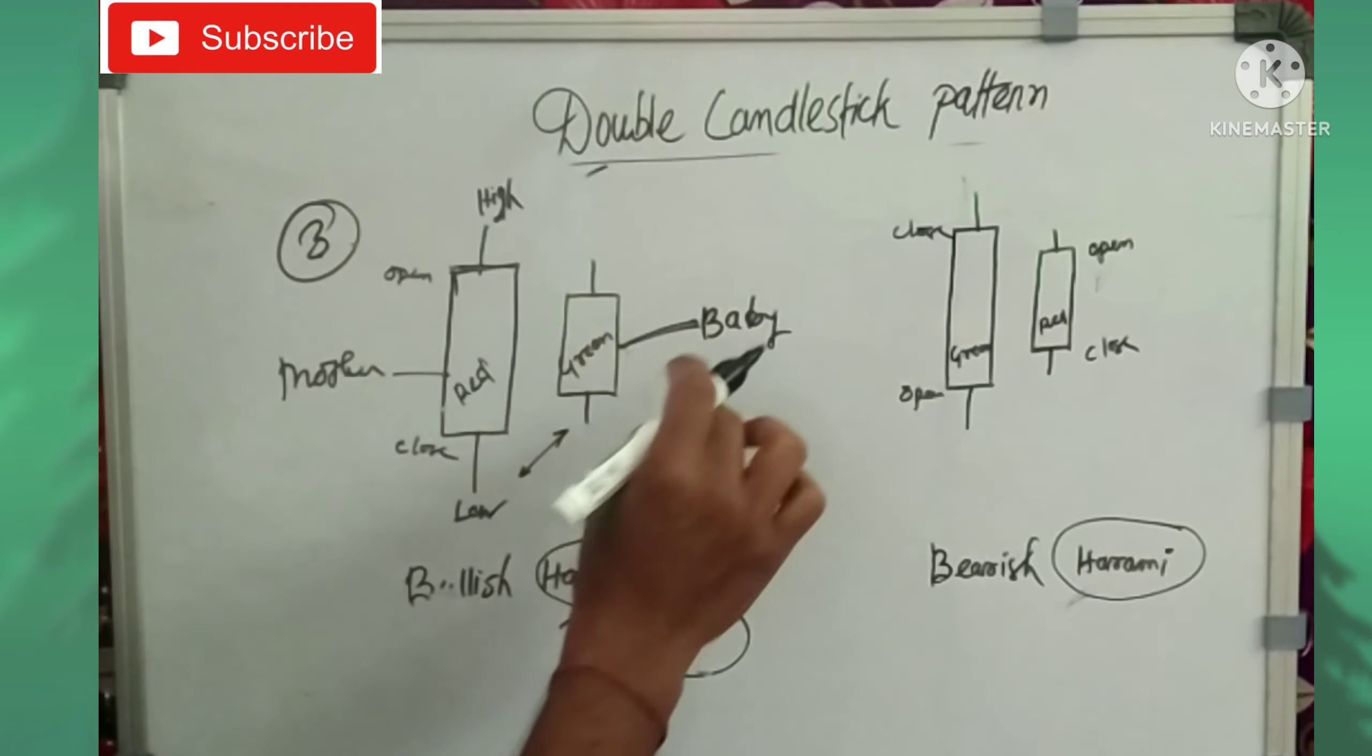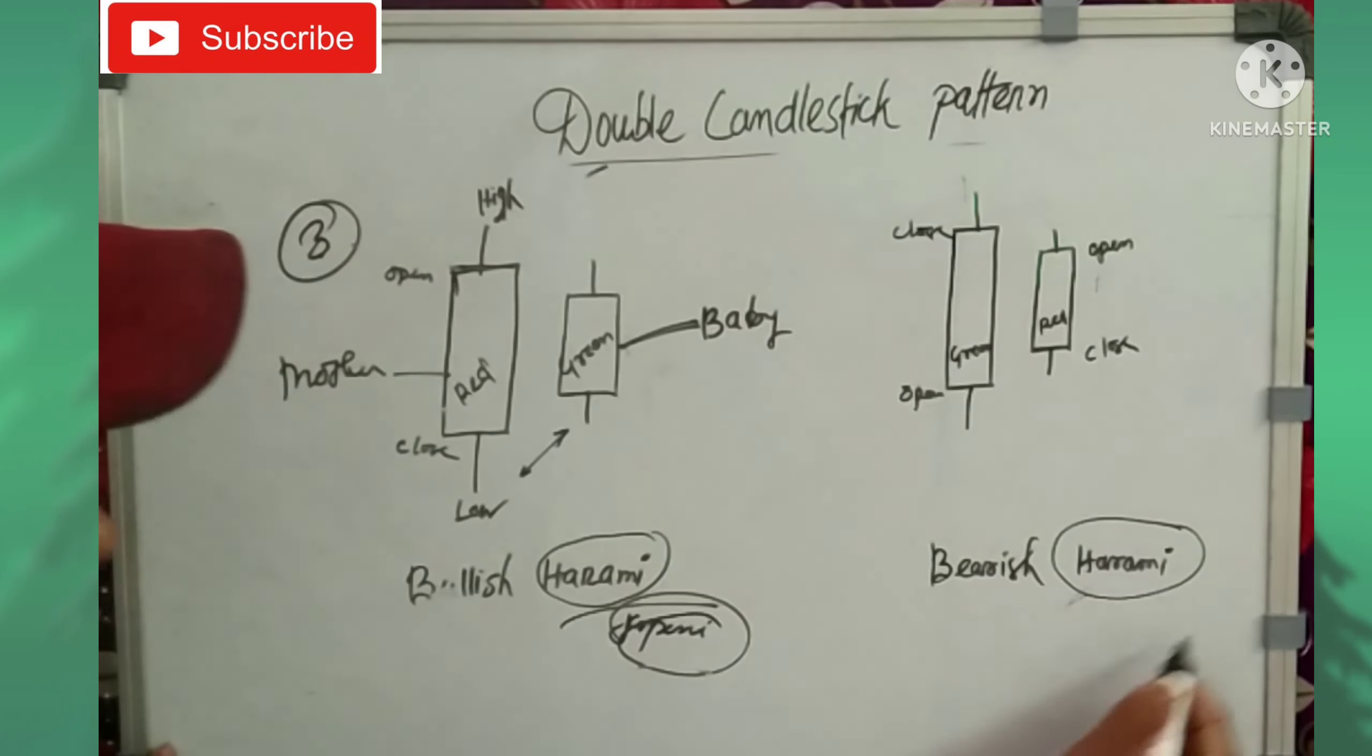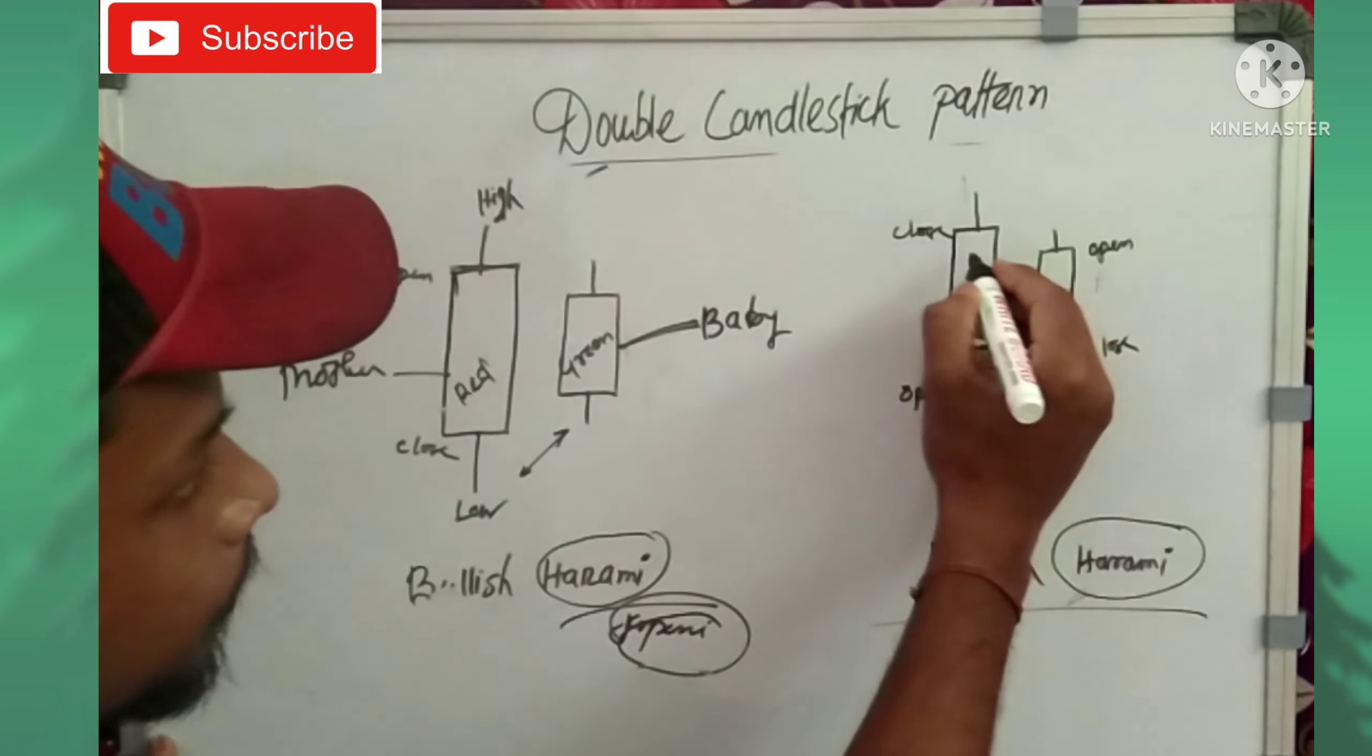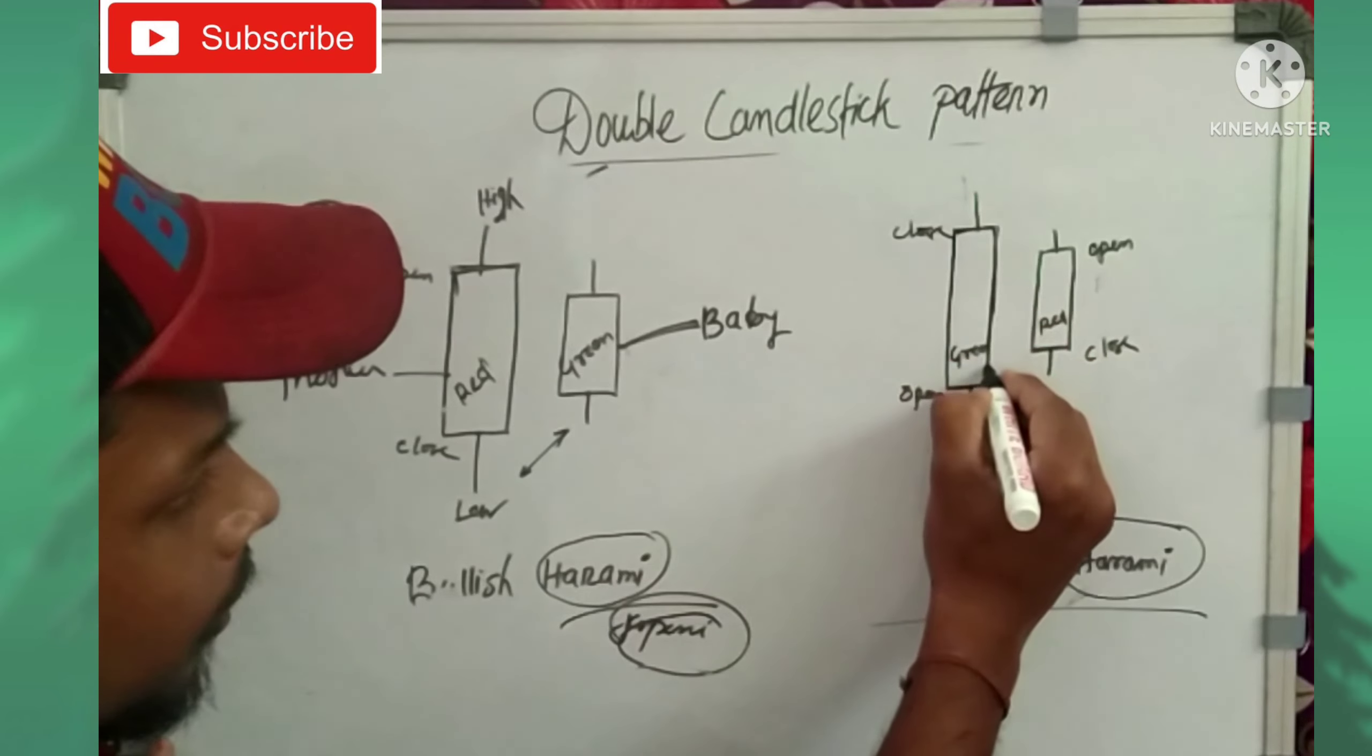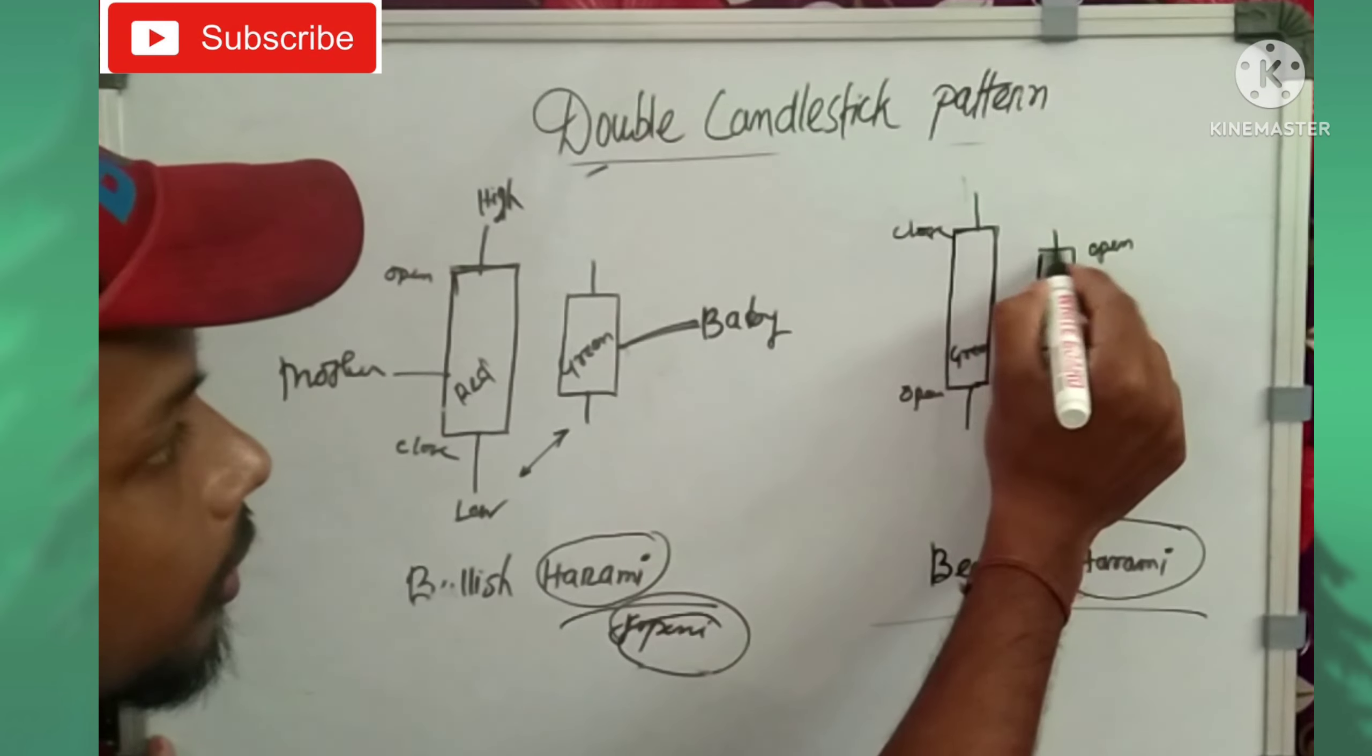The red candle is the mother and green candle is the baby. For bullish harami, if the next candle is green, we get confirmation to trade. For bearish harami, a small red candle forms inside a large green candle.